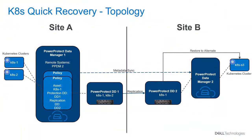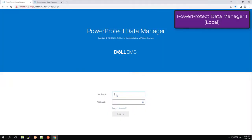Quick Recovery enables restores of Kubernetes namespaces to an alternate cluster in a remote site. For that, a protection policy needs to be configured with replication to a remote PowerProtect DD in addition to primary protection. Metadata is being synced between the local PPDM and the remote one. Now let's head over to the PowerProtect Data Manager UI to see all of that in action.